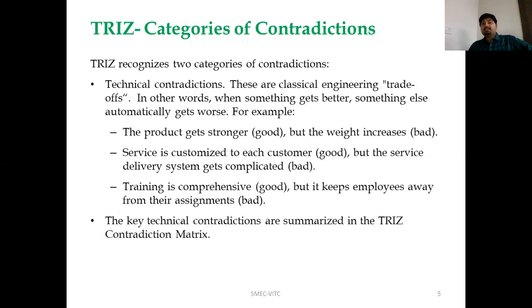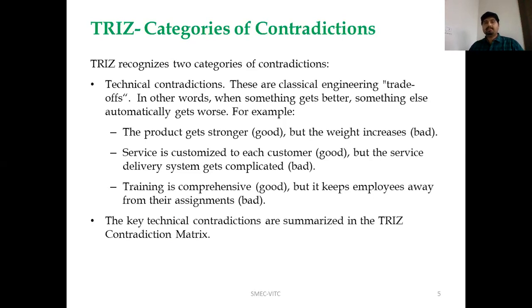TRIZ recognizes two categories of contradictions. The first is technical contradictions: when something improves, something else automatically gets worse. For example, a product gets stronger but the weight increases. Strength improving is good, but can we maintain the weight while improving strength? That is a technical contradiction.